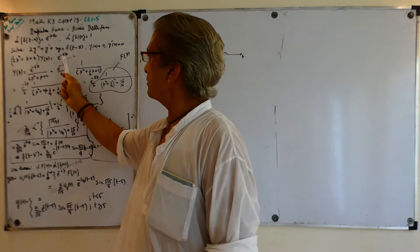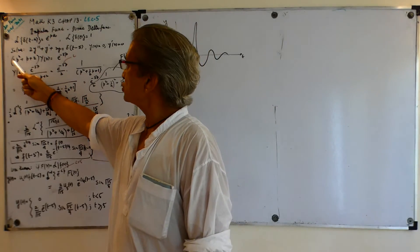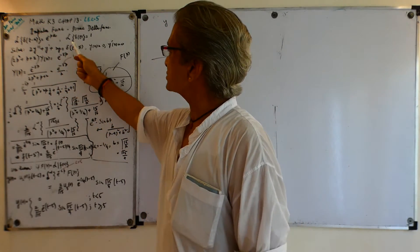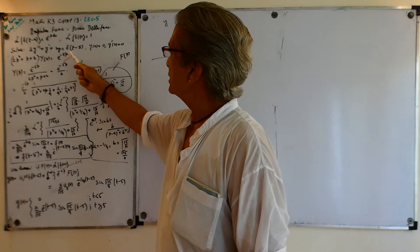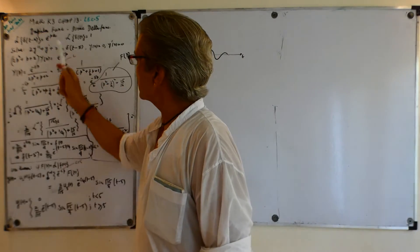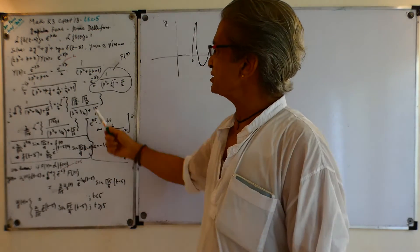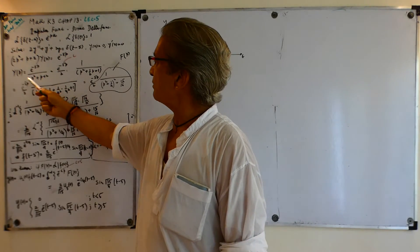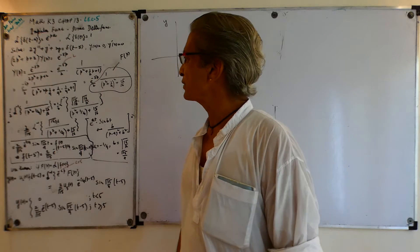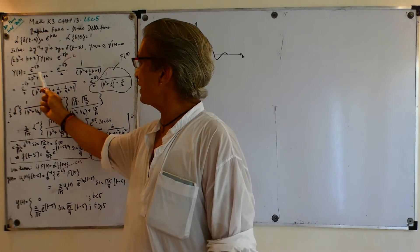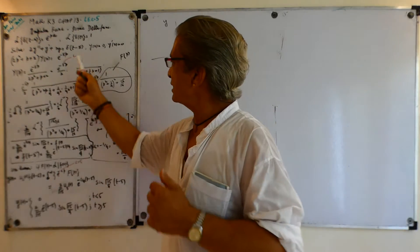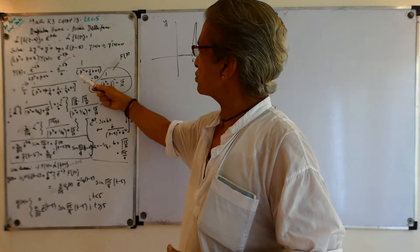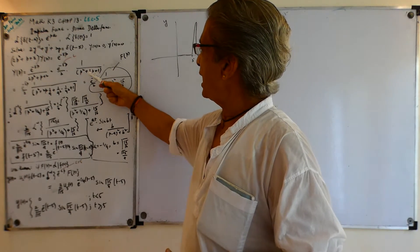So if I take the Laplace transform of this, it's the same thing as before: (2P² + P + 2) · Y(P) equals the Laplace transform of δ(t − 5), which is e^(−5P) because a = 5. I can solve for Y(P): Y(P) = e^(−5P) / (2P² + P + 2). I can factor out the 2 and write it as e^(−5P) / 2 · 1 / (P² + ½P + 1).